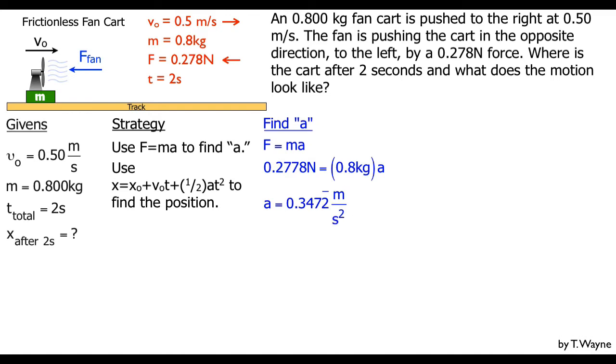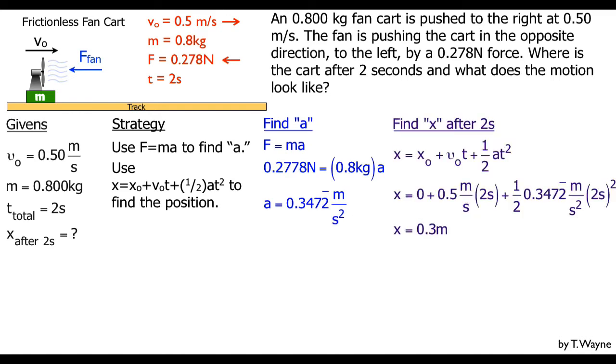So I go through the calculations, I find the acceleration a = 0.3472 m/s², go through the calculations, and I'll find the displacement after two seconds. So after two seconds, it's 0.3 meters away. But that really doesn't describe what happened, what the motion looked like. It just shows me the beginning and the end.